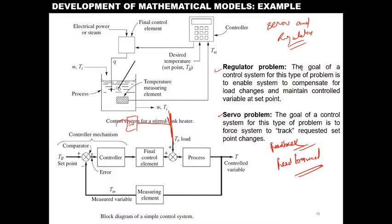In the regulator problem, the goal of the control system is to enable the system to compensate for load changes and maintain the control variable at the set point. The set point is fixed; the load is going to change. In the servo problem, the goal is to track any requested set point change — the set point is going to change. However, the load is fixed and constant. So in the servo problem the load is fixed, and in the regulator problem the load is varying and the set point is fixed.